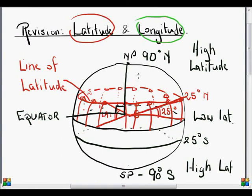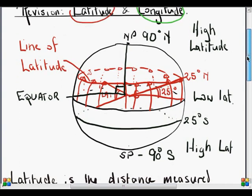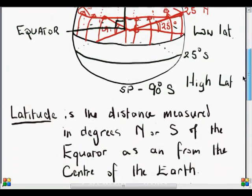Right, now longitude is a little bit more difficult, complicated perhaps than latitude because it is not drawn the same way at all.